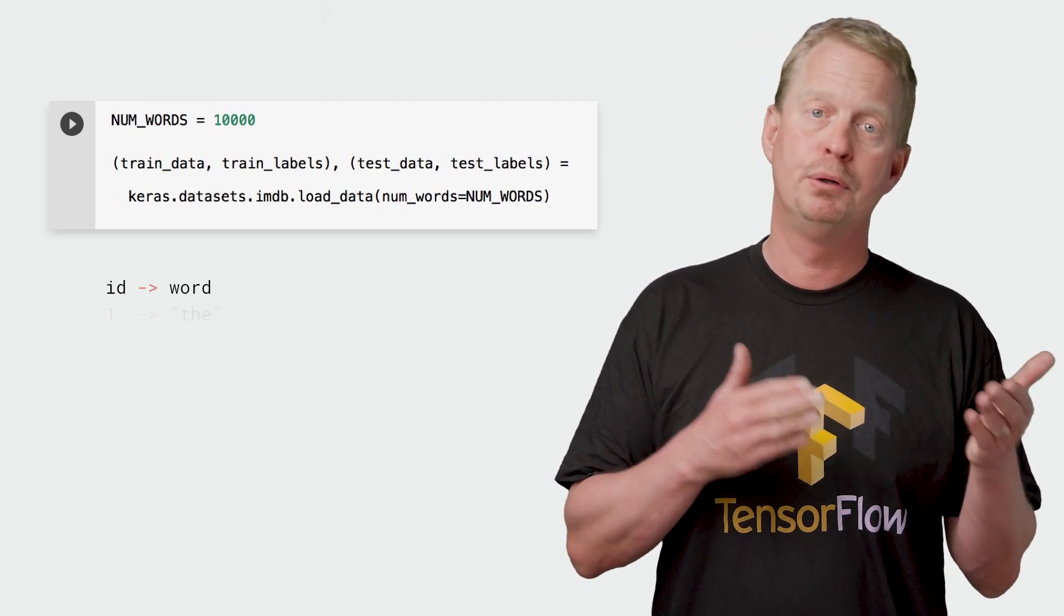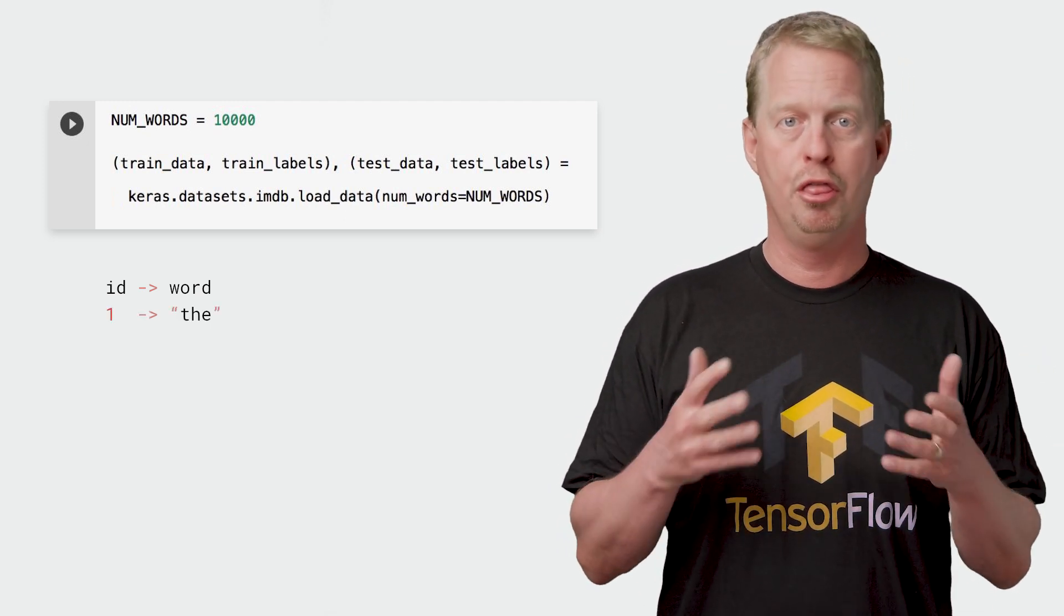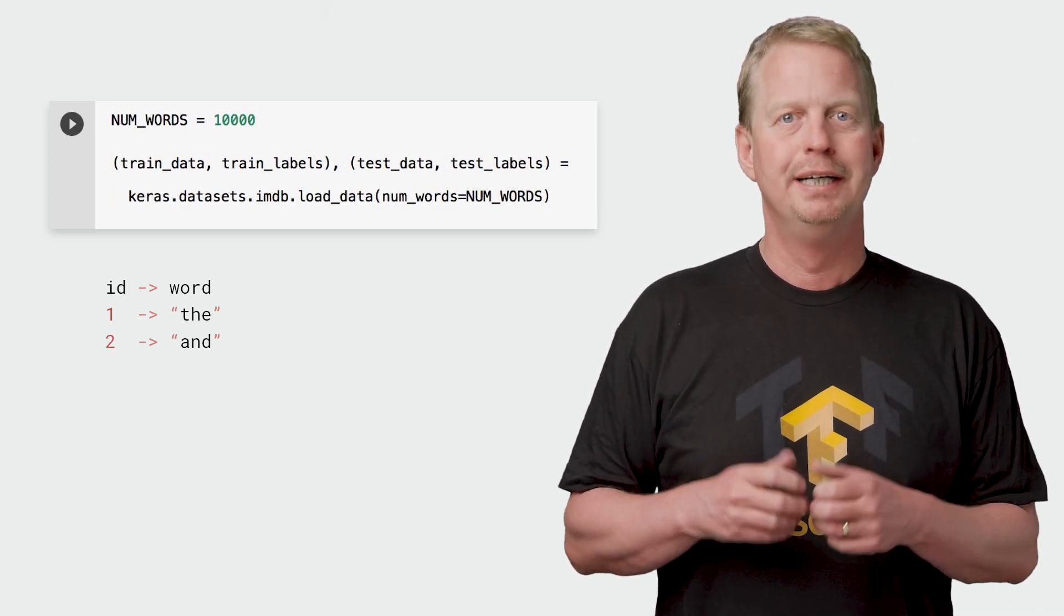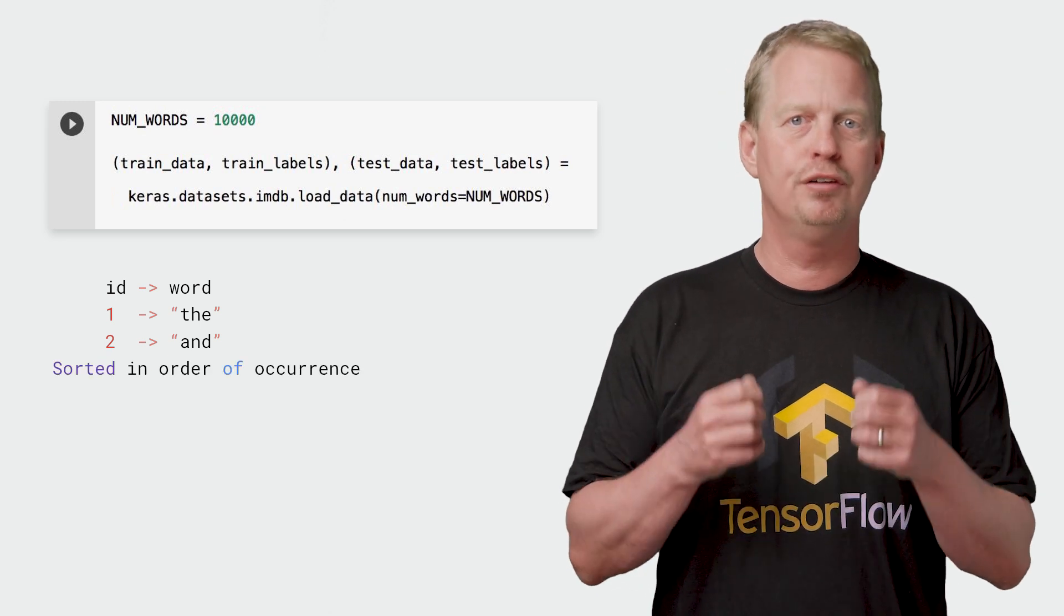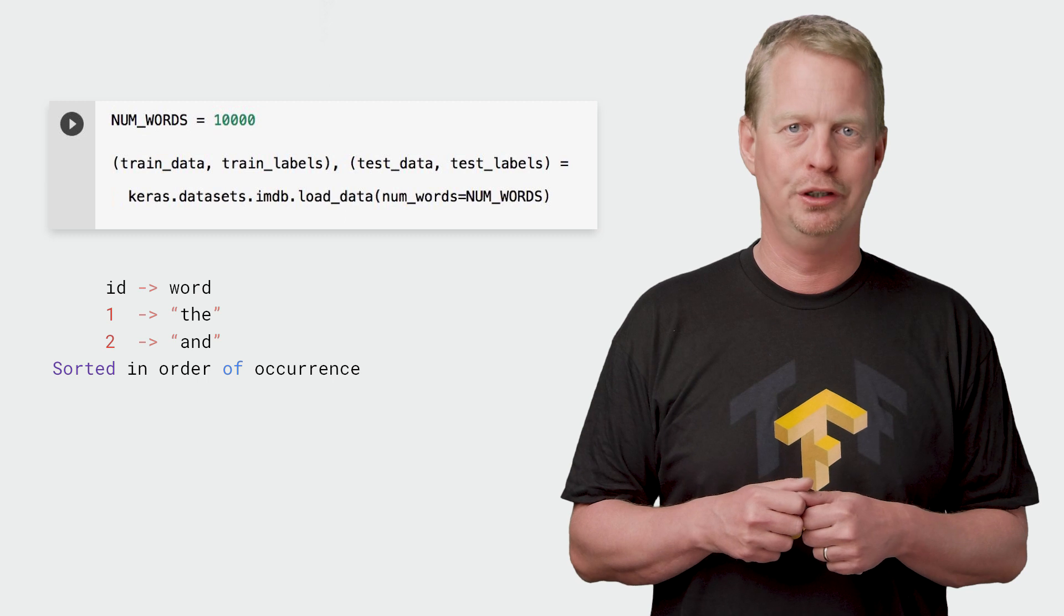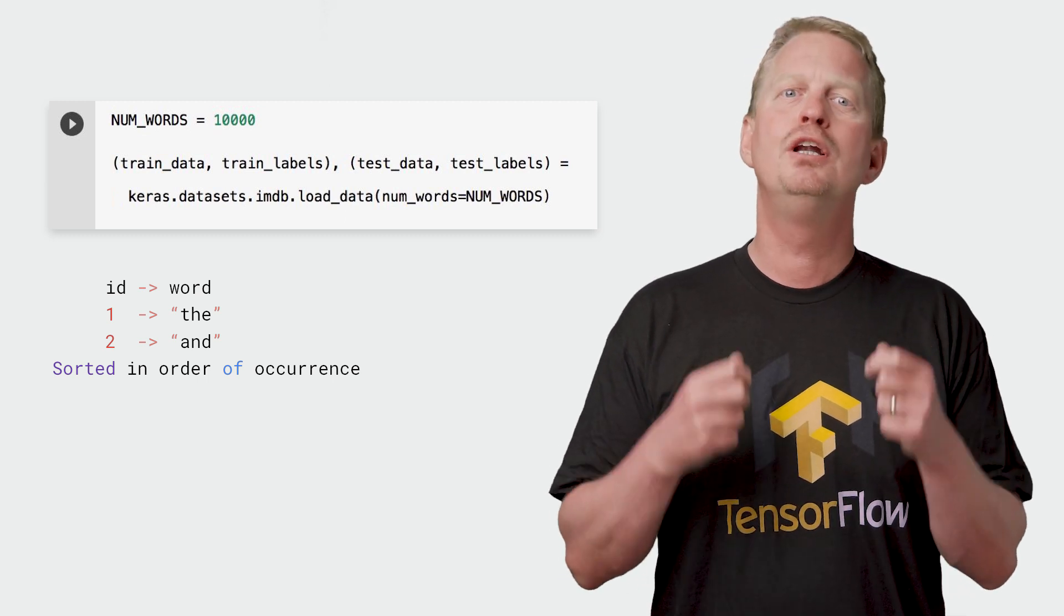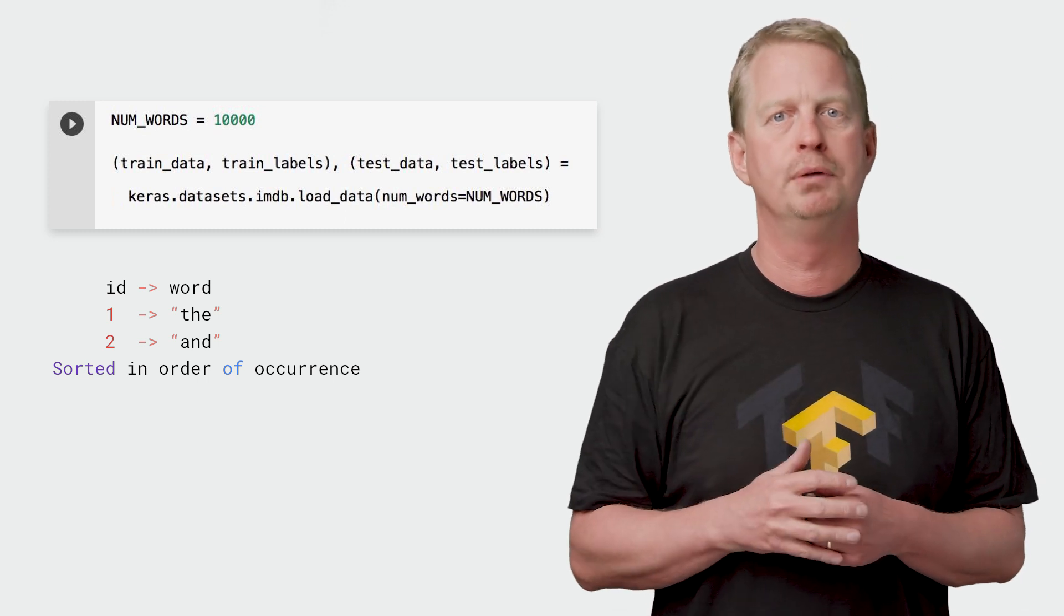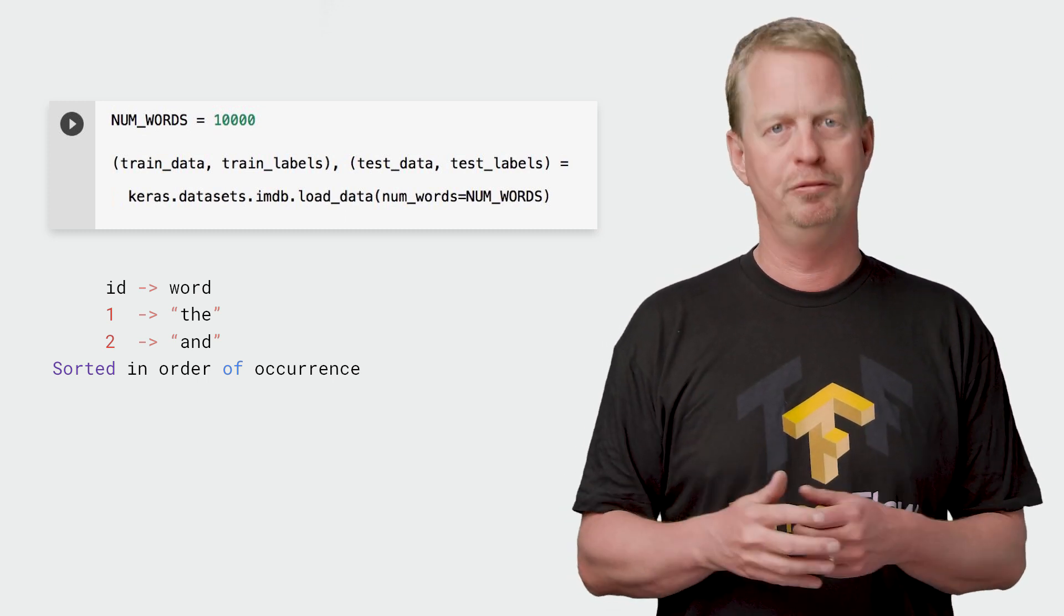Actually, ID number 1 denotes the word 'the', and 2 is the word 'and', and so on. The IMDb dataset is also sorted, meaning that 'the' is the most common word in the reviews. And since we're loading 10,000 words, that means we're loading the 10,000 most common words across all the reviews.